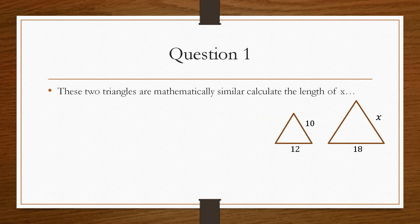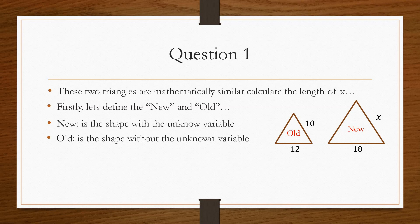So if we take a look at question number 1, it gives us two triangles which are mathematically similar, and it asks us to calculate the length of x. So the first thing we have to do is define the new and the old. Now, we'll call this the new and we'll call this the old, because the definition of the new is the shape that has the unknown value that we need to find. So because the larger shape contains the x, that will be the one we'll call as the new, and the old shape is the one without the unknown variable.